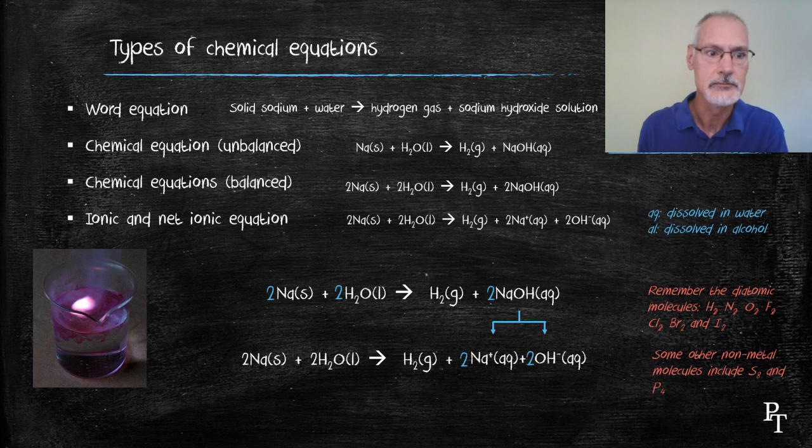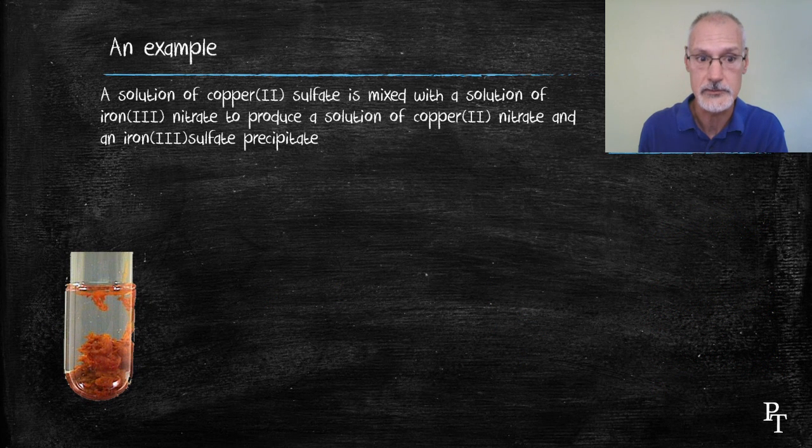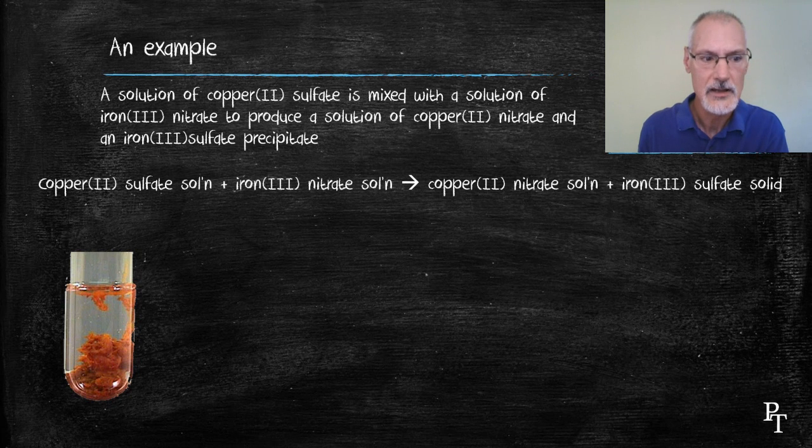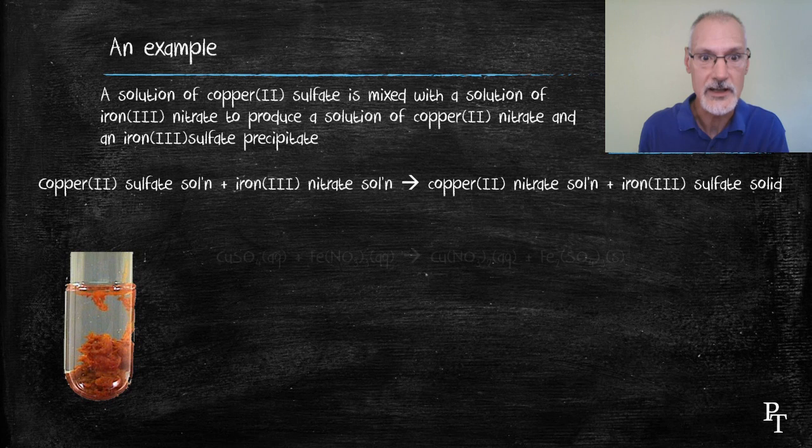Let's take a look at another example, copper 2 sulfate being mixed with an iron 3 nitrate solution. Here's the equation for what goes on. The next thing I do is convert each of the substances into their appropriate chemical formula.